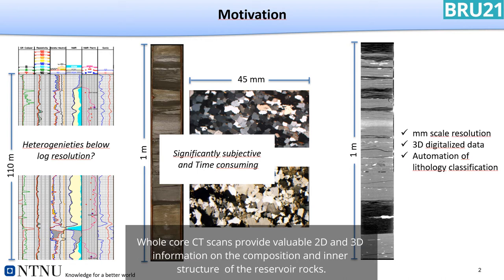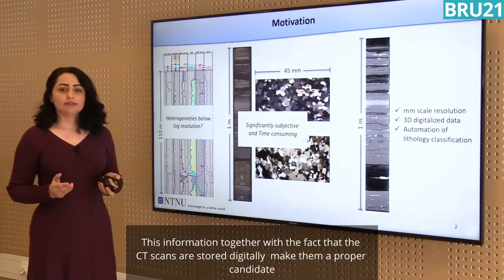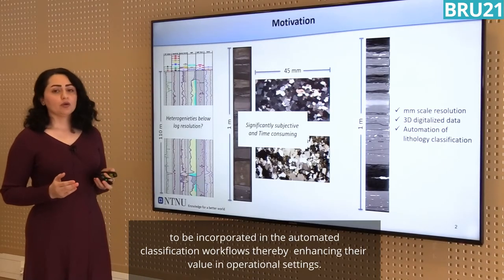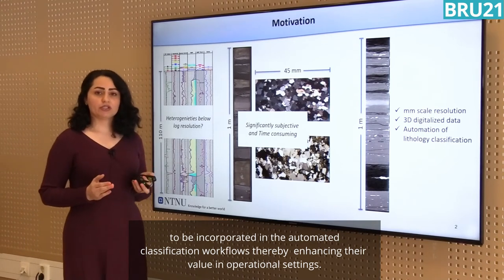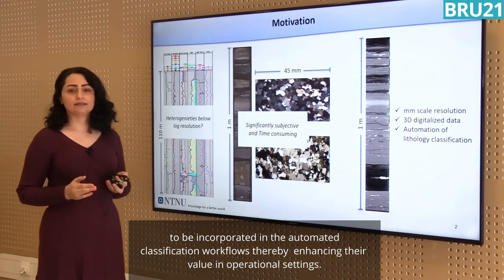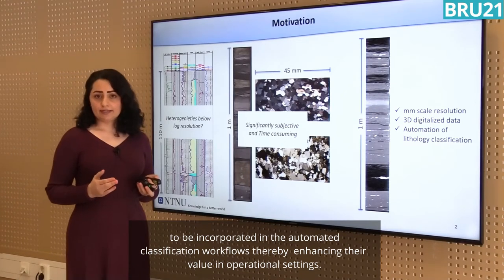Whole core CT scans provide valuable 2D and 3D information on the composition and inner structure of reservoir rocks. This information, combined with the fact that CT scans are stored digitally, makes them a proper candidate to be incorporated in automated core classifications, thereby enhancing their value in operational settings.